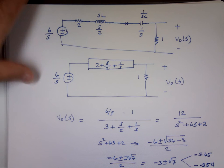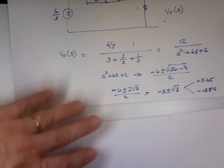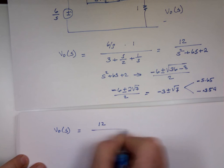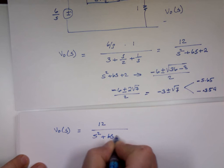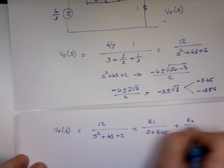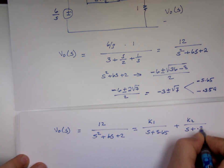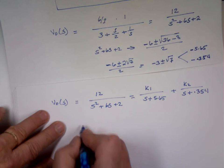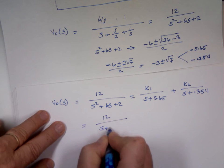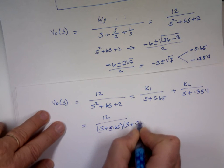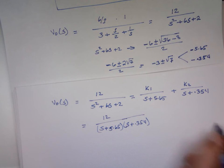So I can take V_out as a function of s, which is 12 over s² plus 6s plus 2, and I can rewrite that as k1 over s plus 5.65 plus k2 over s plus 0.354. That's what the bottom is equal to. So again, if you factor the bottom, you end up with this. I should have wrote that first. But s plus 5.65, right? Yes. Thank you.